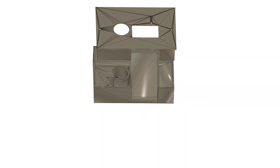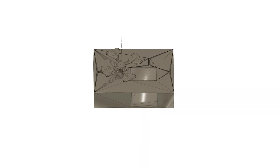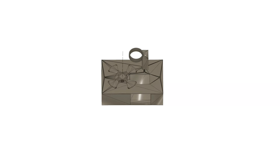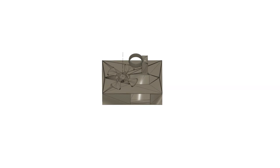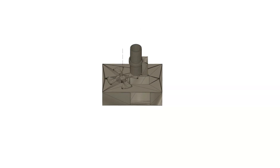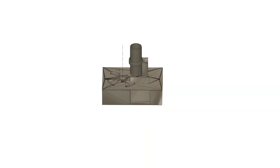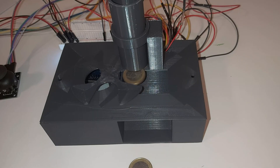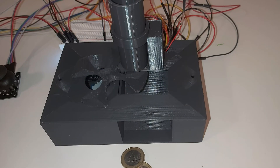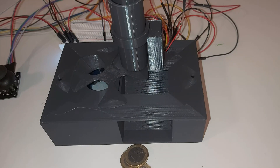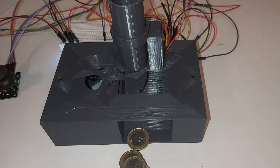The bottom part of the ATM consists of a base to house the stepper motor as well as the second Arduino. Above that is a cover followed by a spinning coin distributor and a coin magazine. A rotating circle with a coin-sized cutout dispenses coins every 1.5 seconds.